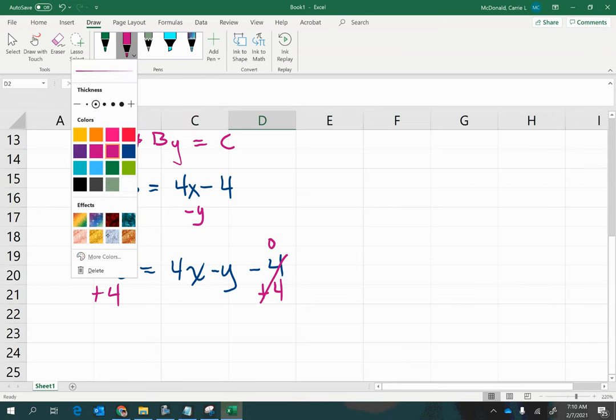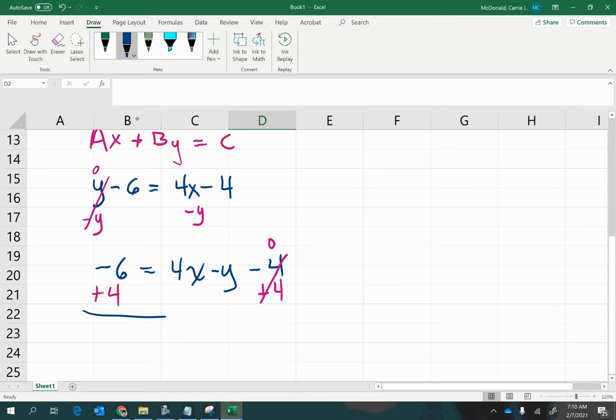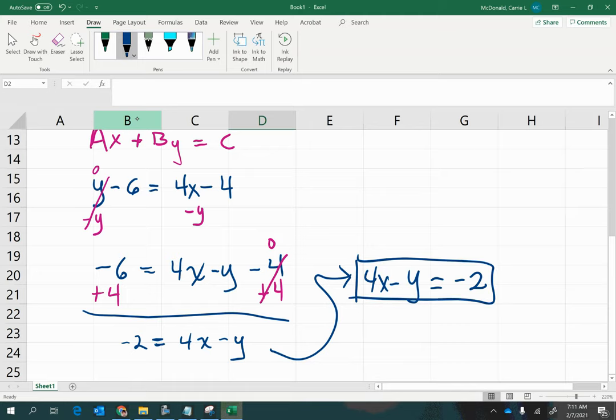And so then we have our new version. Negative 2 is equal to 4x minus y. And this is almost perfect, but we usually like to see the 4x minus y on the left side, and there's no problem with rewriting it that way since the equal sign goes both ways. So we can just finalize this as 4x minus y equals negative 2. So that's the answer in standard form.